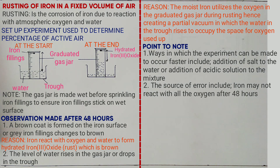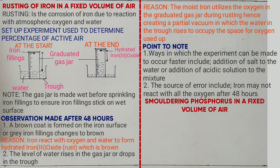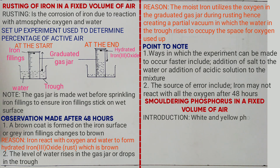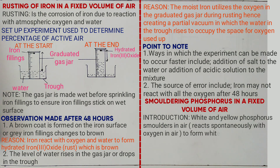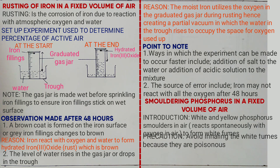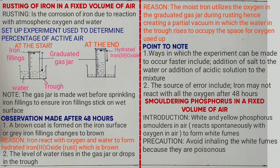The next experiment is smoldering of phosphorus in a fixed volume of air. We have several types of phosphorus: white, yellow, and red. White and yellow phosphorus smolders in air — it reacts spontaneously with oxygen in air to form white fumes. A precaution taken during the experiment: avoid inhaling the white fumes, because they are poisonous.